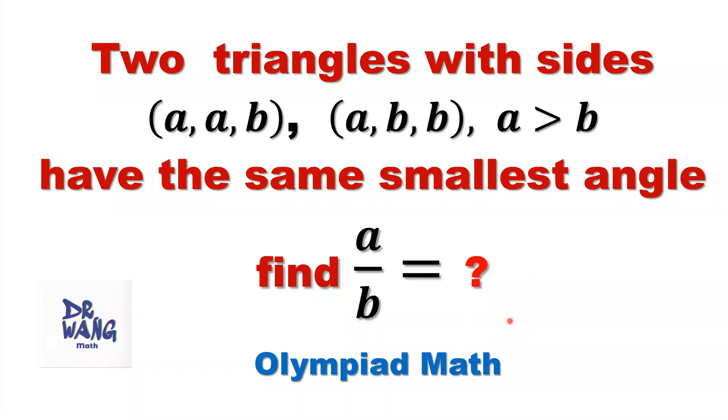Hello, I'm Dr. Wen. Here is the question. Two triangles with sides (a, a, b) and (a, b, b), where a is bigger than b, both have the same smallest angle. We want to find the ratio a over b.